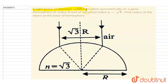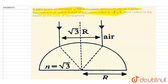Hello everyone. A light beam of diameter √3r is incident symmetrically on a glass hemisphere of radius r. The refractive index is given as √3. Find the radius of the beam at the base of the hemisphere.